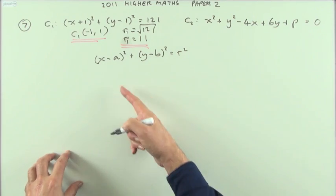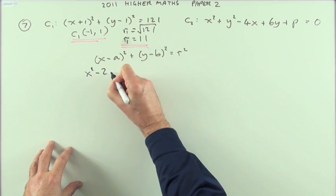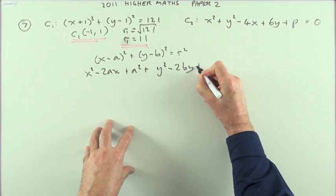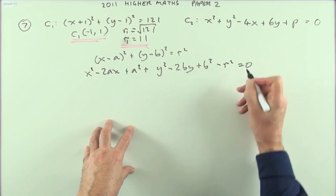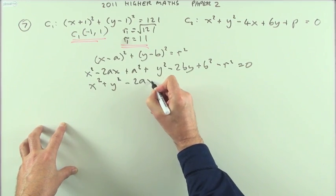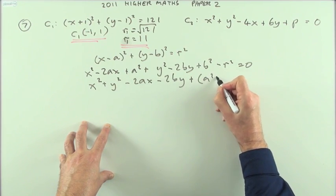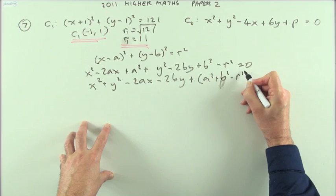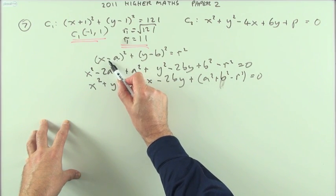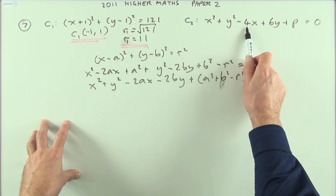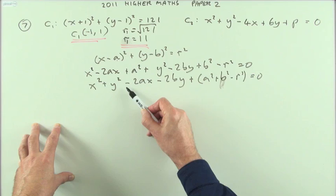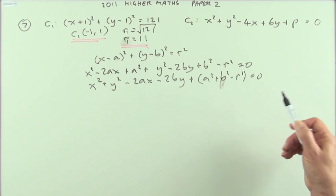Expanding that bracket: squaring gives x² − 2ax + a², and for y: y² − 2by + b², then bringing the r² over gives minus r² equals zero. Putting it in order — squares first, then the variables, then constants — puts it into the general expanded form. All that's happened to the original center is instead of minus a, it becomes minus twice a, whether you call it a, or f and g for convenience.